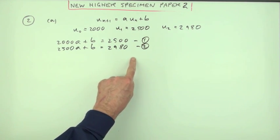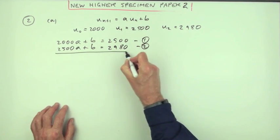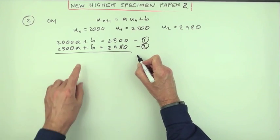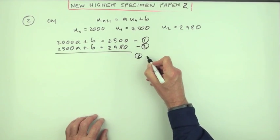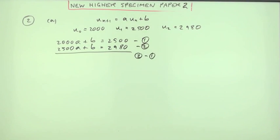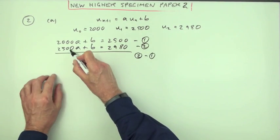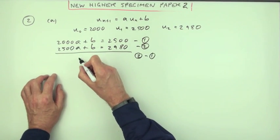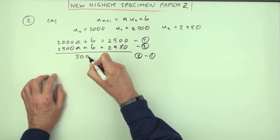Simplest way to solve them would be to subtract them. Now I don't need to subtract them that way around. I can just as easily say 2 take away 1. So 2 take away 1. That would give me 2,500 take away 2,000 is 500A.